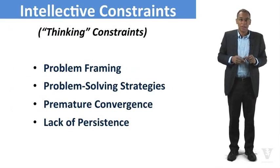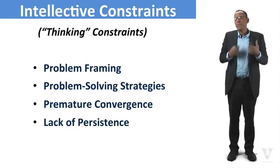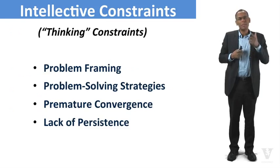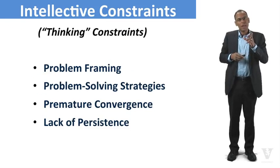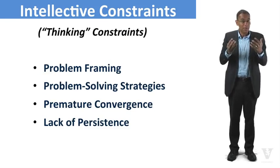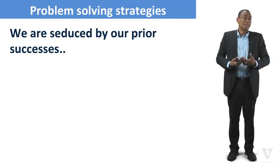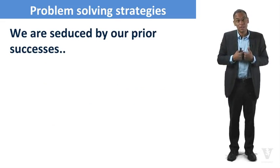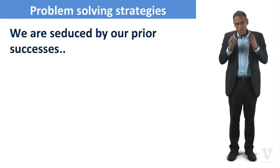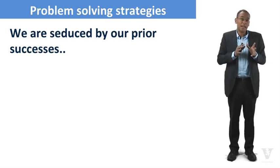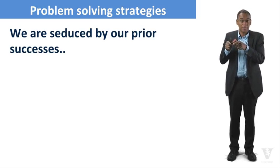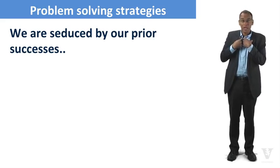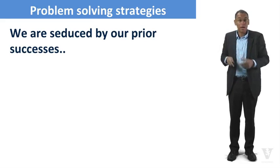Now let's talk about problem-solving strategies. The ways we solve problems — we've become seduced by them. Maybe you're really good at math, so you tend to go around looking for problems as if they were math problems, because those are the ones you're good at. Being good at a problem-solving method makes you want to do more of it, because it feels good to be good at something. We have to make sure we're not seduced by our strategy and that we're always applying the right one to the particular problem — it's not about what we're good at, it's about what is suitable.